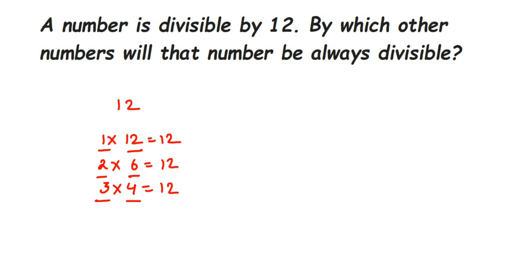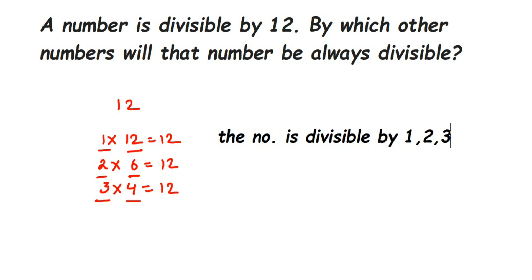So the number is divisible by 1, 2, 3, 4, 6, and 12 — that's nothing but the factors of 12. Therefore, the number is divisible by 1, 2, 3, 4, 6, and 12. If a similar question comes with a different number instead of 12, just find the factors of that number and you'll get the answer. If you have any questions, drop a comment. Thank you for watching!